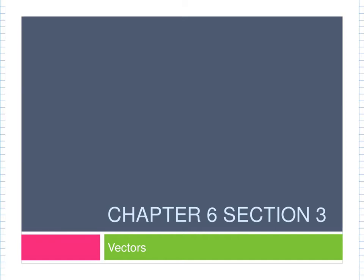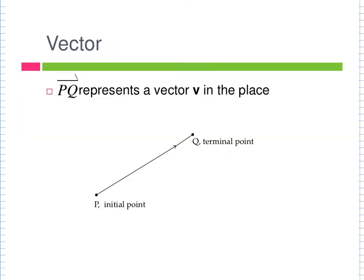A vector is kind of like a ray from geometry. Rays have an endpoint and an arrow — that's the difference with vectors. Vectors have two endpoints, but there's still an arrow, and the arrow shows you the direction in which the vector is heading. There is an initial point where it starts and a terminal point where it stops, and the arrow points towards the terminal point.